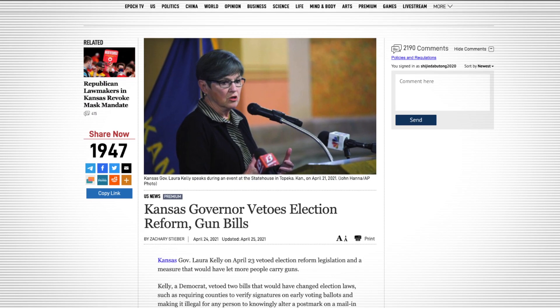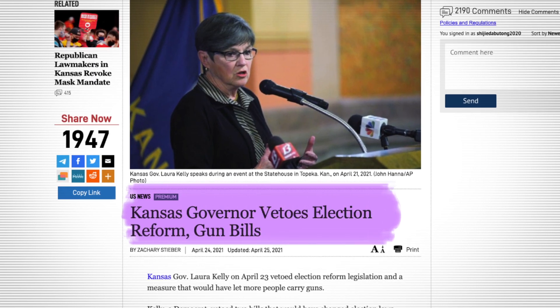And now let's talk a bit about Kansas. Three days ago, the governor of Kansas, a Democrat by the name of Laura Kelly, vetoed three different bills. Two of them were election reform bills, and the third would have allowed more people to carry guns. The first two bills, the ones about election reform, they would have changed Kansas' election laws, such as by requiring counties to verify the signatures on early voting ballots, and by making it illegal for any person to knowingly alter a postmark on a mail-in ballot.